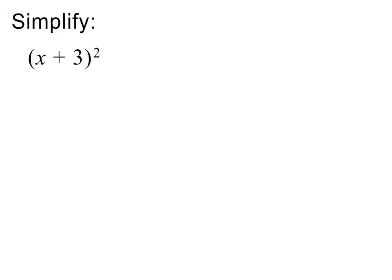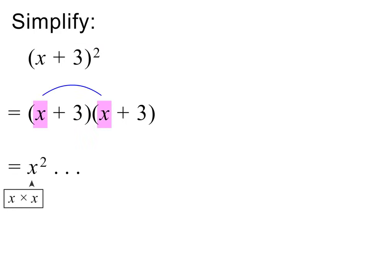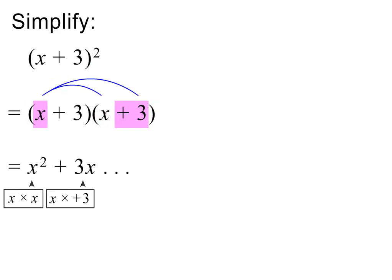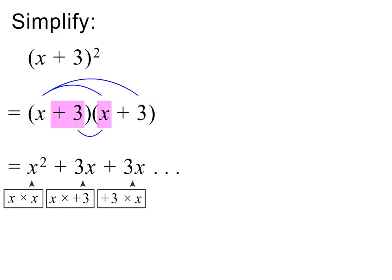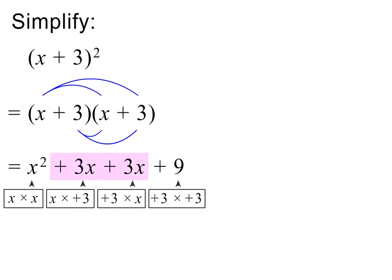The next example looks different. The power of 2 tells us that we need to multiply the bracket by itself. We proceed as before using FOIL. x times x equals x squared. We then multiply the outer terms: x times plus 3 equals plus 3x. And then the inner terms: plus 3 times x again equals plus 3x. And then the last terms: plus 3 times plus 3 equals plus 9. We have like terms — 3x plus 3x equals 6x — so the answer is x squared plus 6x plus 9.